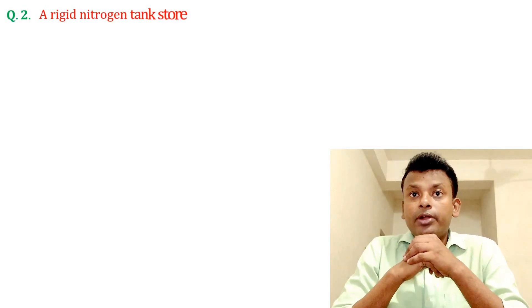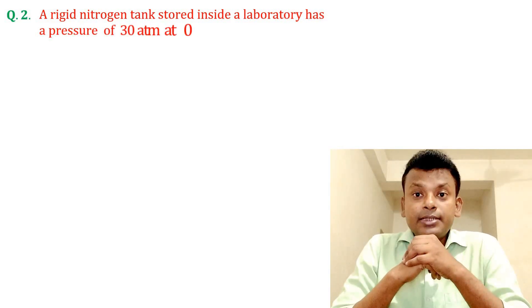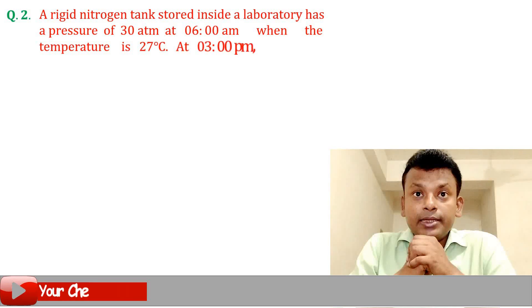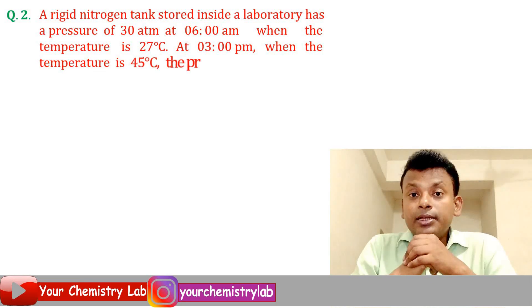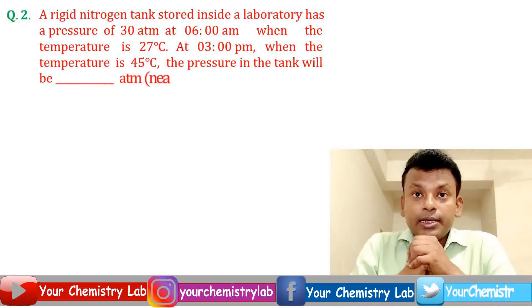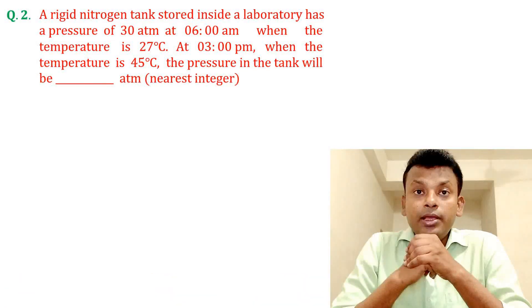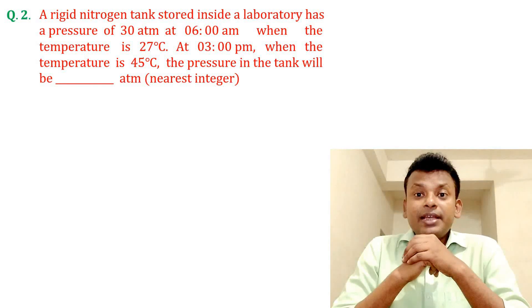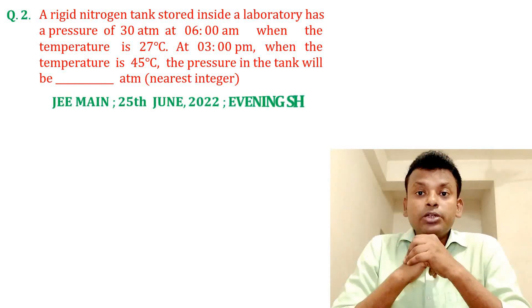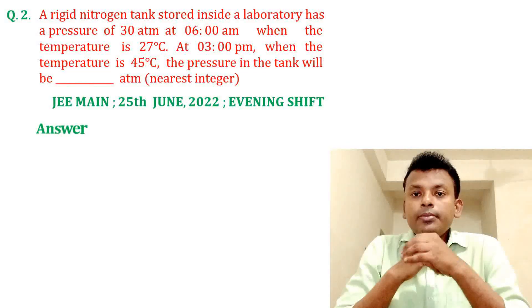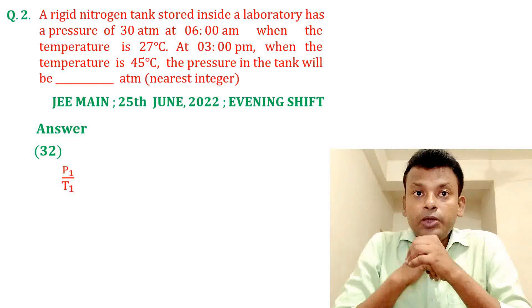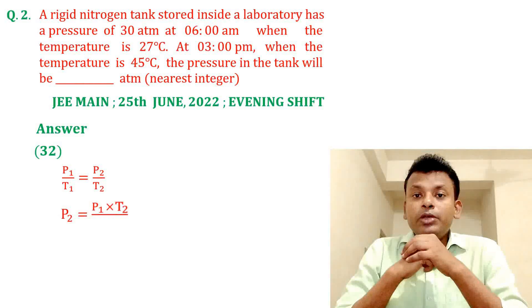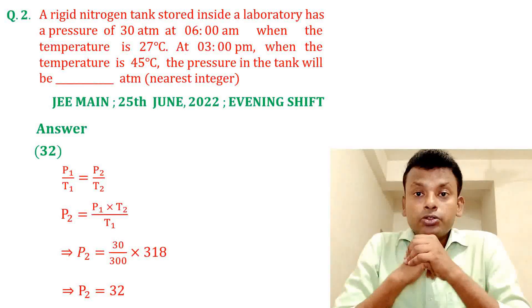Question 2. A rigid nitrogen tank stored inside a laboratory has a pressure of 38 atm at 6 AM when the temperature is 27°C, and at 3 AM when the temperature is 45°C, the pressure in the tank will be dash atm (nearest integer). This question was set in JEMN 25th June 2022 evening set. Answer is 32. We know that P₁/T₁ = P₂/T₂, so P₂ = P₁ × (T₂/T₁). Putting in all values, P₂ equals 32.